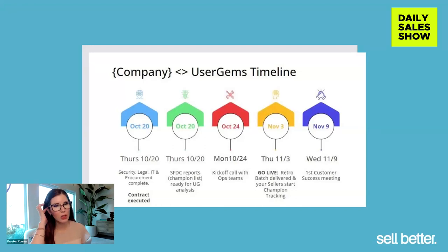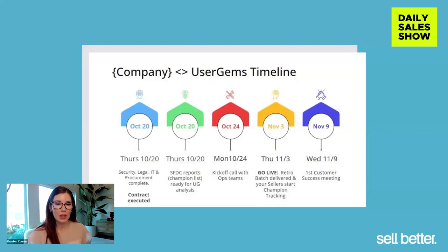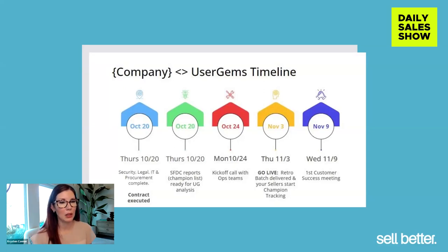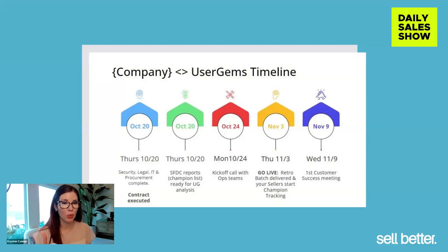This is what I've actually used at UserGems when I was in an individual contributor role. The first thing that's different about this from many mutual action plans is that the first step is getting a contract executed. In many sellers' minds, that's the second-to-last step — but in the customer's mind, in the customer journey, their relationship with our company and our product, the contract signing is where it starts. That's where they've taken on a huge risk, and so we want to address: what comes next? How do we get to success for you?